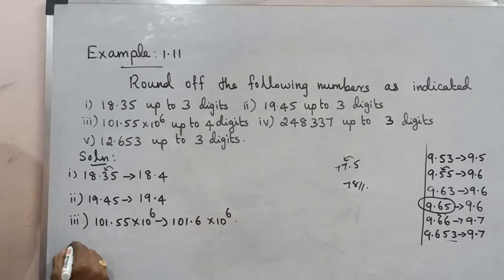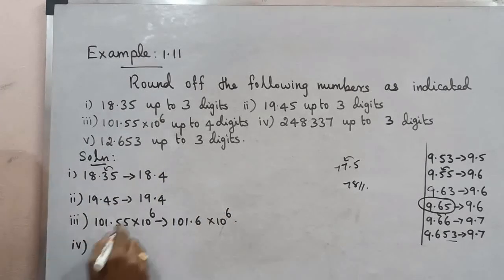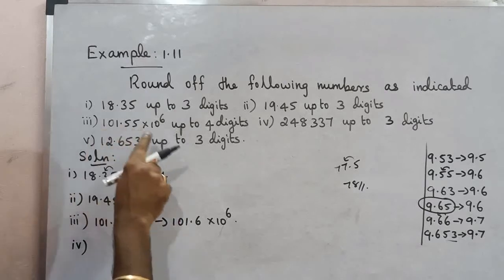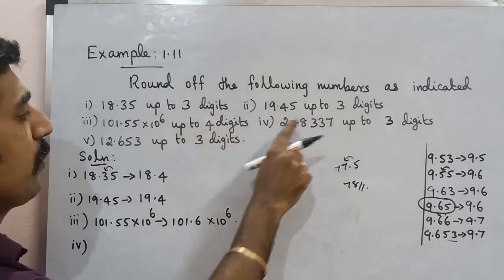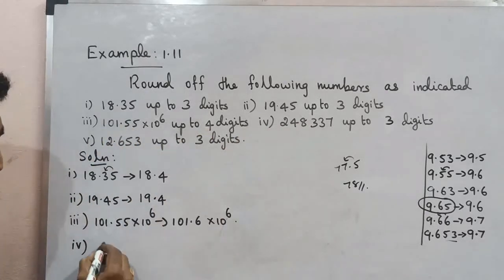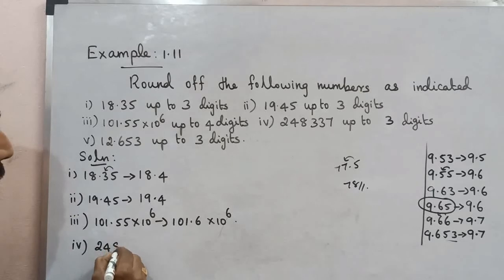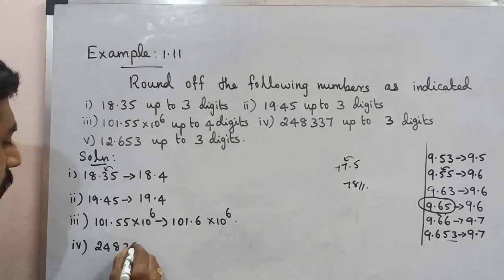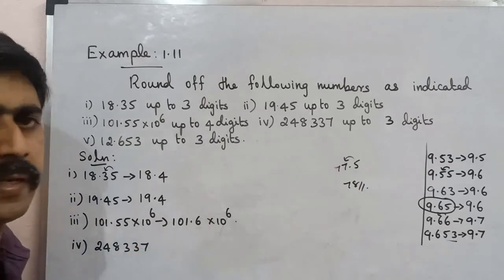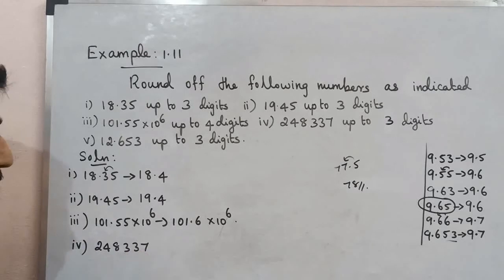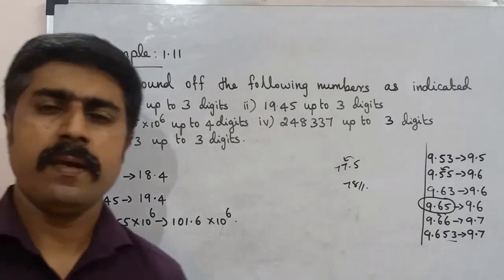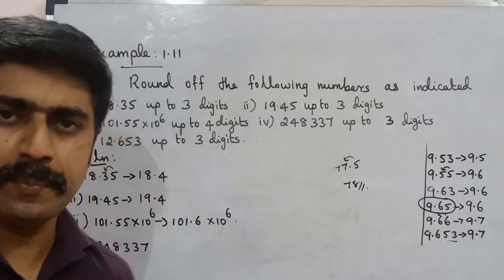Example 4: 2,48,337, round to 3 digits. There are 6 digits total, and we need 3 significant digits. Counting 1, 2, 3 — the third digit is 8. We look at the digit after: it is odd.